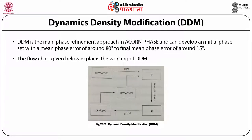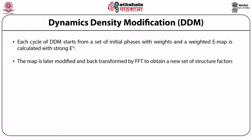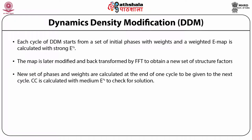This explains the dynamic density modification: starting from the observed phase E values and obtained phases, fast Fourier transformation is done, then electron density calculations are performed. Density modification converts rho to rho prime. Then inverse fast Fourier transform is applied to obtain E calculated and phi calculated, which goes back into the iterative cycle. Each cycle of DDM starts from a set of initial phases with weights; a weighted E-map is calculated with strong E's. The map is modified and back-transformed by FFT to obtain a new set of structure factors, and new phases and weights are calculated at the end of each cycle. CC is calculated with the medium reflections to check for a solution.